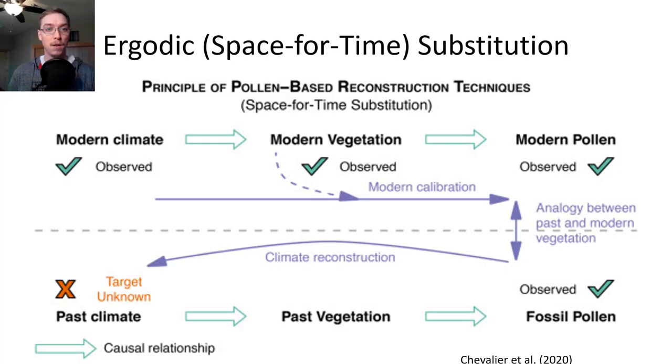So we can use it for ergodic or space for time substitution. The principle of pollen based reconstruction techniques: we look at our observed modern climate, we know what our climate is like right now. We look at the vegetation that is on our surface right now and we observe the pollen that's being distributed by that vegetation. If we can link it with predecessor species or plants of a similar type in time we're able to push that record back. If we can do carbon dating or other forms of dating where we know how old the pollen was, we can look at what plants were on the surface at that time and make safe inferences on what the climate must have been like.